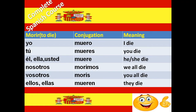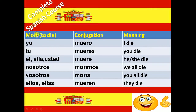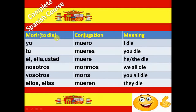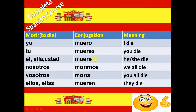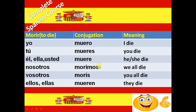Next irregular verb is Morir. Morir means to die. And the conjugation of Morir verb is Muero, Mueres, Muere, Morimos, Moréis and Mueren.